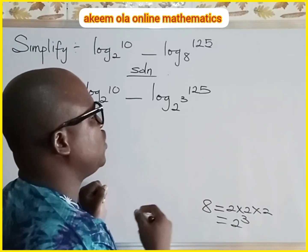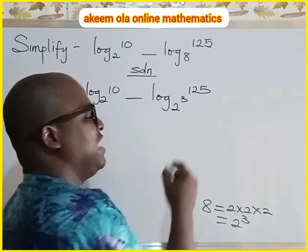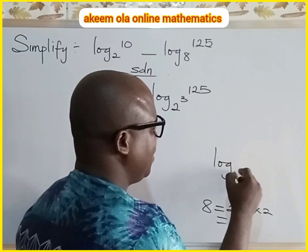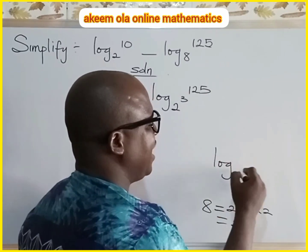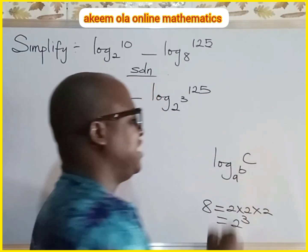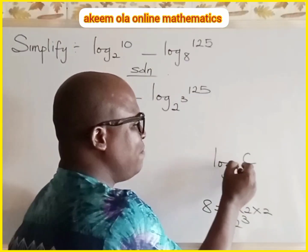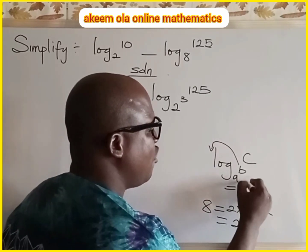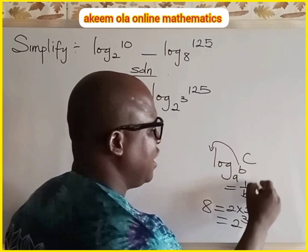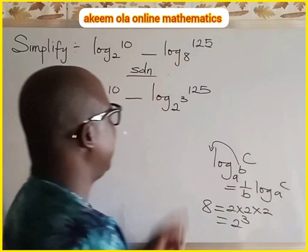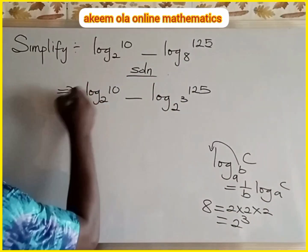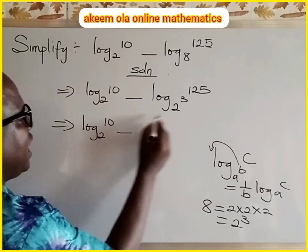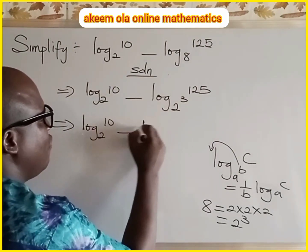There is a law we need to consider: whenever the base is having a power. If we have something like log where the base is a raised to power b, and then we have c as the argument, then b moves to the other side and it becomes one over b times log base a of c. Applying this, our expression becomes log base 2 of 10 minus one-third times log base 2 of 125.